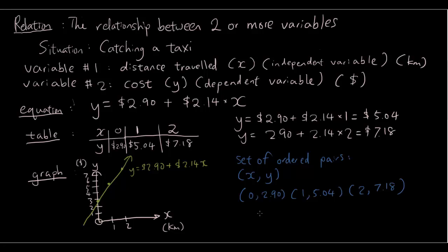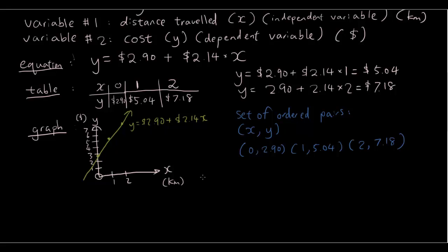You can also do a mapping. So, the mapping. Let me just scroll down a bit. So, the mapping is simply drawing two circles. Alright. And let's put all the possible numbers for x in one circle. So, we have 0, 1, 2 and so on.